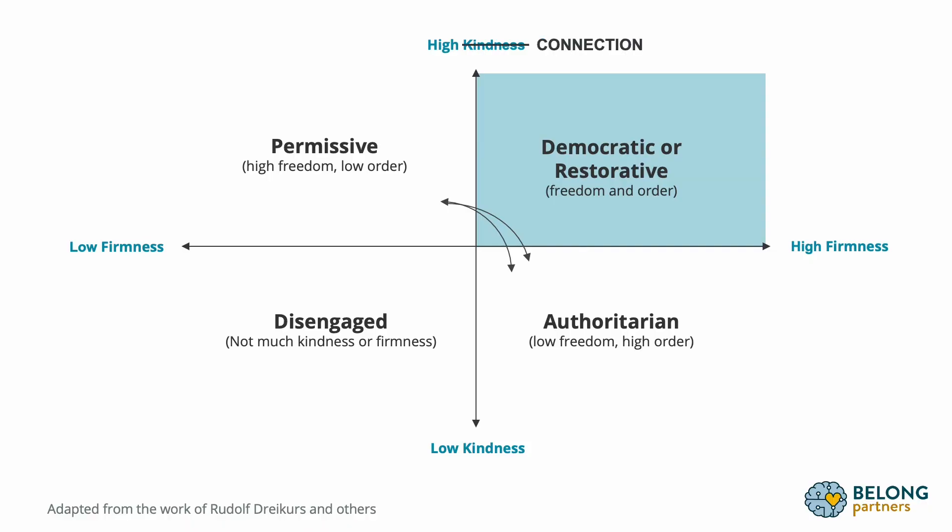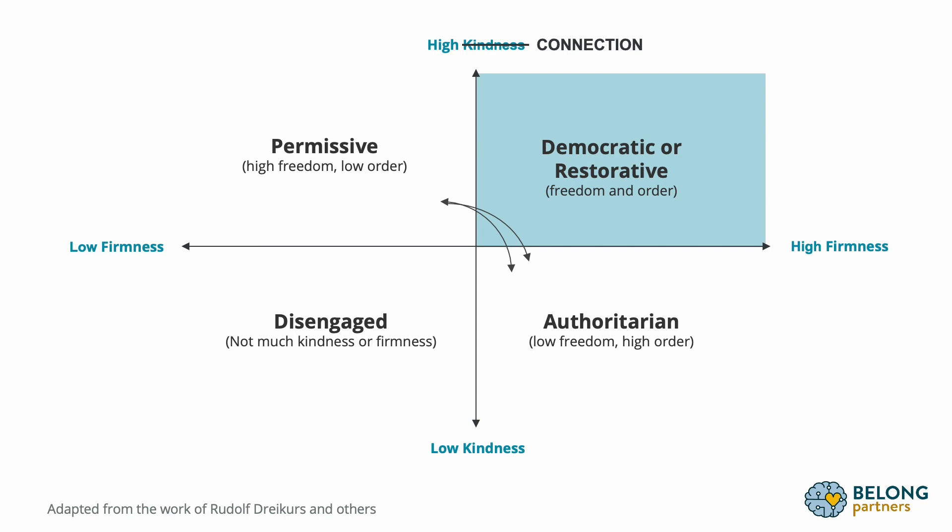Zaretta Hammond refers to this as being a warm demander. It's important to note that we're talking about something more than just kindness — more than just being nice. What we're really talking about is connection: I'm connected to you, I'm holding you in dignity and respect, I care about you, and I wish the best for you no matter what. And the firmness piece is being grounded in my respect for myself, for my values, what I believe in, and what the needs of the group in general are.